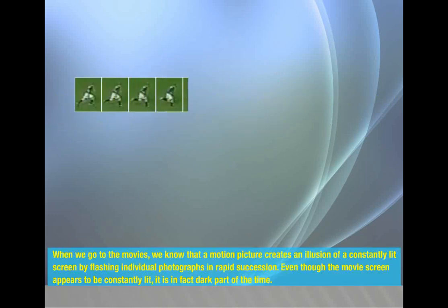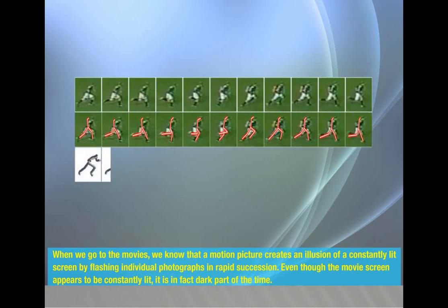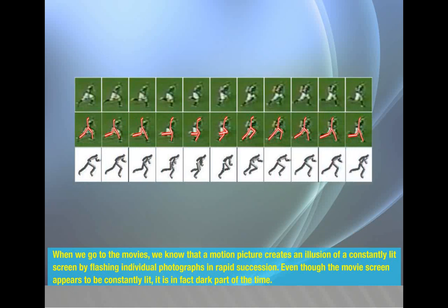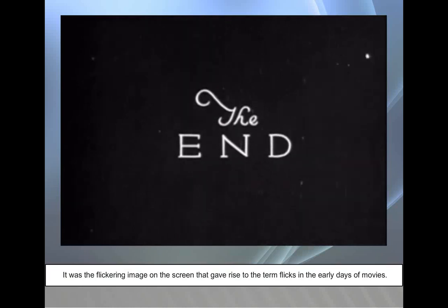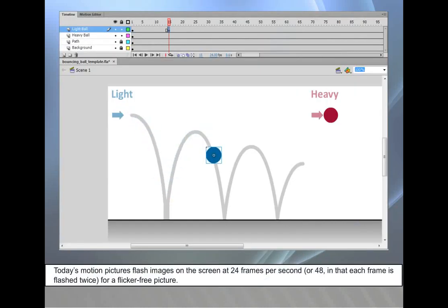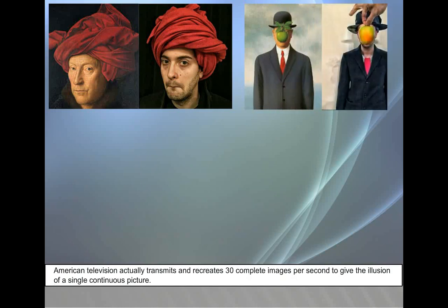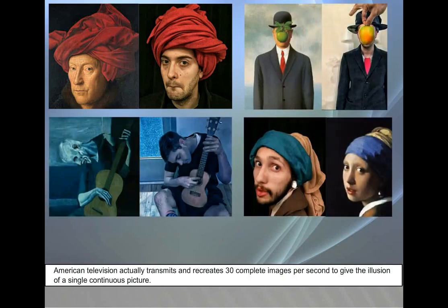When we go to the movies, we know that a motion picture creates an illusion of a constantly lit screen by flashing individual photographs in rapid succession. Even though the movie screen appears to be constantly lit, it is, in fact, dark part of the time. It was the flickering image on the screen that gave rise to the term 'flicks' in the early days of movies. Today's motion pictures flash images on the screen at 24 frames per second, or 48 in that each frame is flashed twice for a flicker-free picture. American television actually transmits and recreates 30 complete images per second to give the illusion of a single continuous picture.